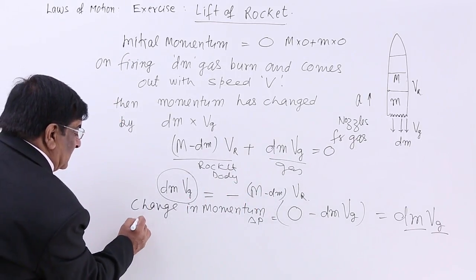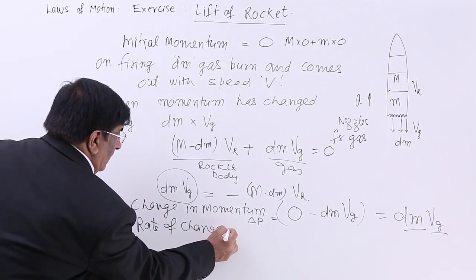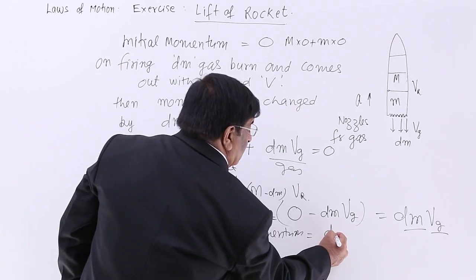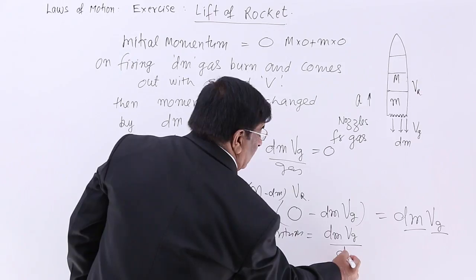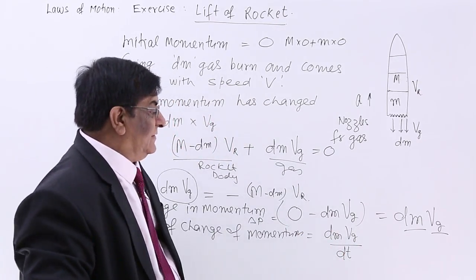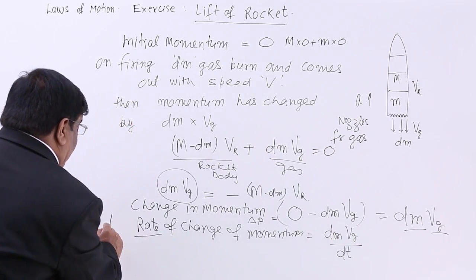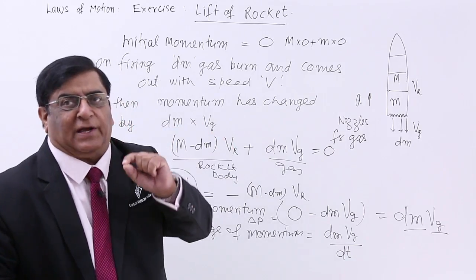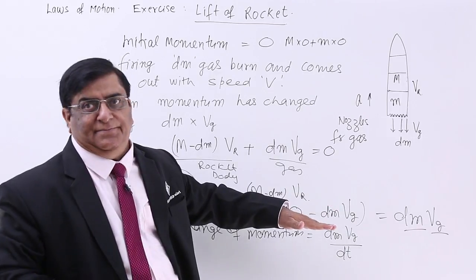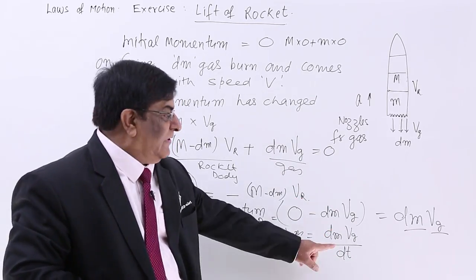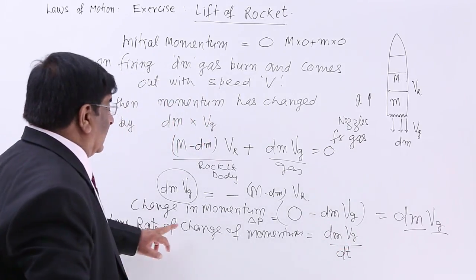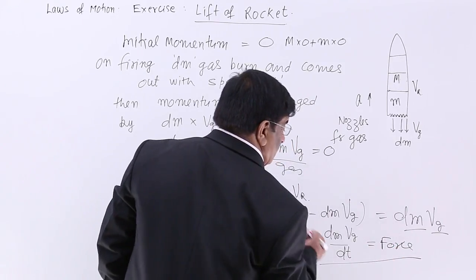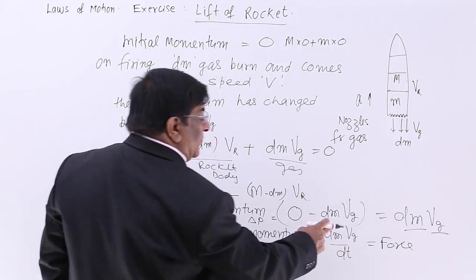Then what is the rate of change of momentum? This is equal to dm×v_g divided by the small time it has taken dt. dm/dt×v_g. When we say rate, it's time rate. It has taken a very small time dt in which a very small gas dm has burned. The rate of change of momentum is force according to second law. So this is the force on the rocket.